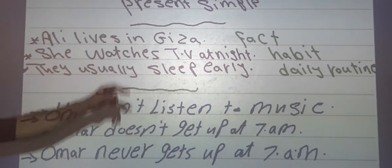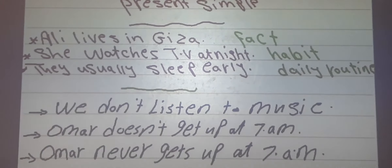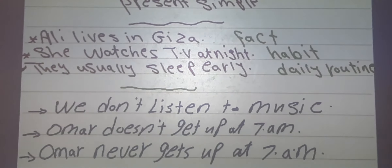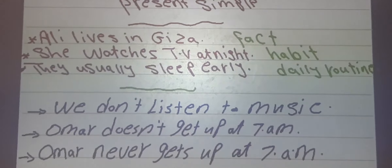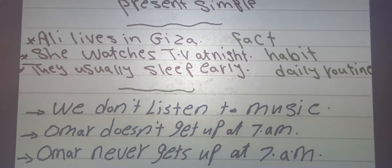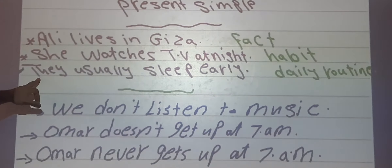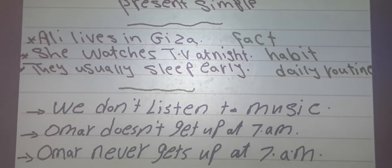Pay attention: Ali lives — we add S to the verb. She watches — we add ES. So with pronouns he, she, it, we add S, ES, or IES. But with plural pronouns or plural nouns, we put the verb in the base form.